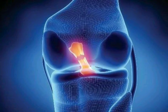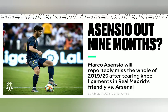Marco Asensio has ruptured his ACL in his left knee, according to multiple reports. Now let's take a look at what is the ACL injury, the complications of it and its treatment.